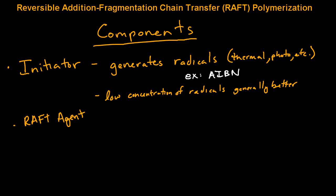The second important component of a RAFT polymerization is your RAFT agent. The RAFT agent you choose will be based on the monomers in the system. For more activated monomers, like methacrylates, you'll want to use a more activated RAFT agent. I'll put a link in the description to a paper that describes this in more detail.